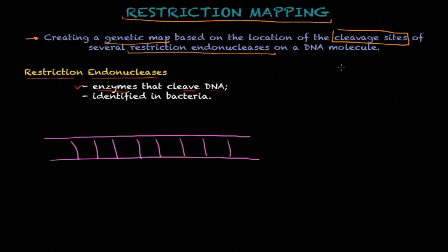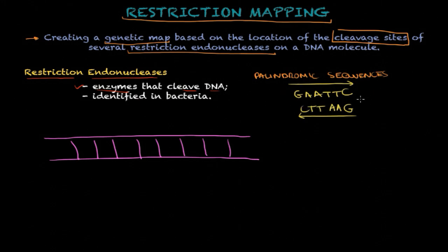These enzymes recognize palindromic sequences. I don't know if you heard what a palindrome is - basically the sequence of numbers or letters that can be read the same way forward and backward. But on DNA, what this means is that if you have a sequence that reads GAATTC in this direction, when you look at the complementary sequence, you will also read GAATTC.